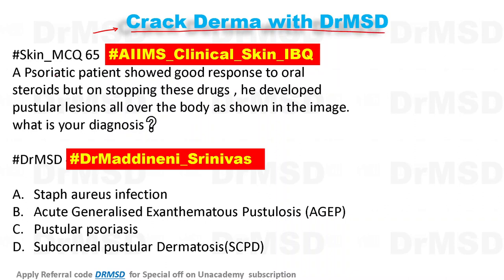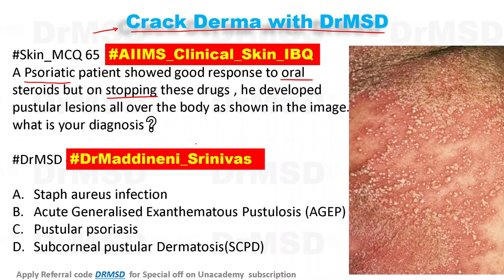Today's question is: a psoriatic patient showed good response to oral steroids, but on stopping these drugs he developed pustular lesions all over the body. As shown in the image, you can see there is an erythematous base with pustules studded on top, present all over the body.